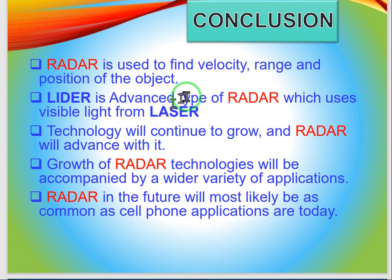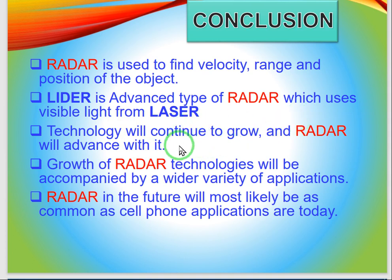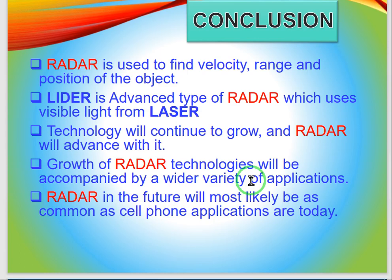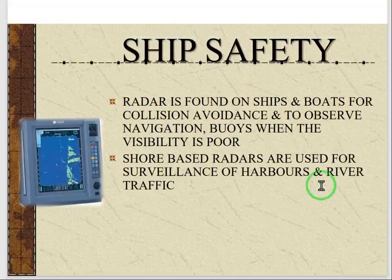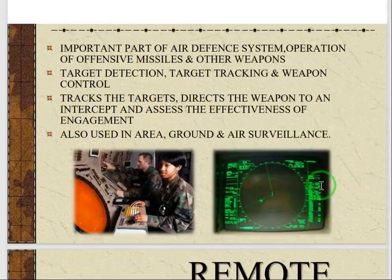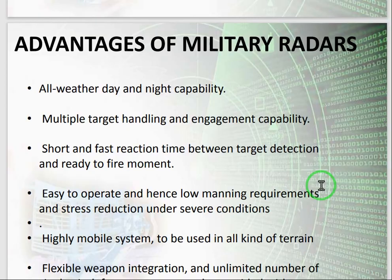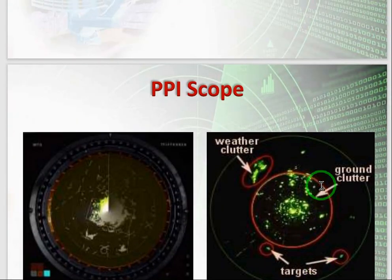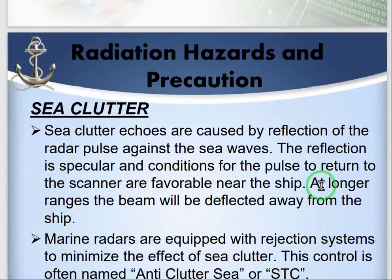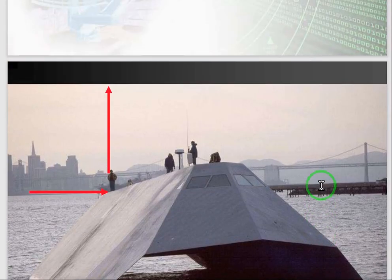In conclusion, radar can be used to find the velocity, range, and position of an object. LIDAR is an advanced type of radar which uses visible light from a laser. Technology will continue to grow and radar will advance with it. The growth of radar technologies will be combined with a wide variety of applications. Radar in the future will most likely be as common as cell phone applications. That's all for the radar — we will discuss this in a zoom session. If you have any query, you can contact me. Thank you very much.